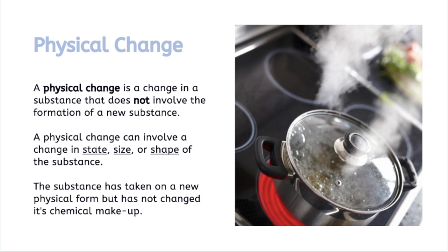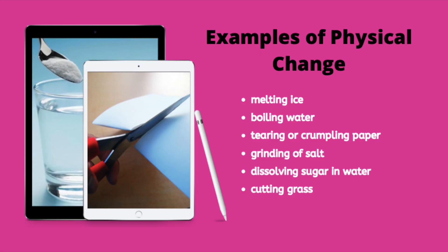The substance has taken on a new physical form, but has not changed its chemical makeup. Melting ice, boiling water, tearing or crumpling up a piece of paper, grinding salt, dissolving sugar or salt in water, and cutting grass are all examples of physical change.